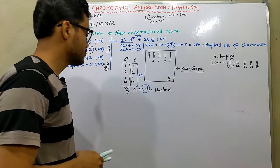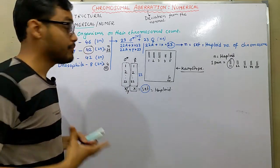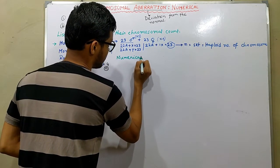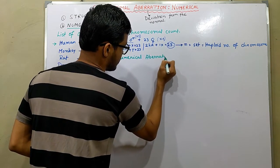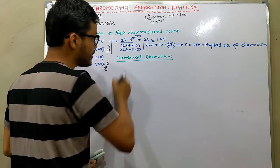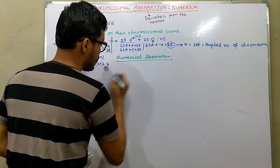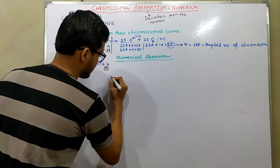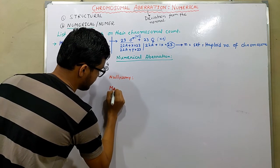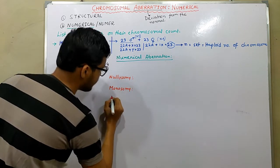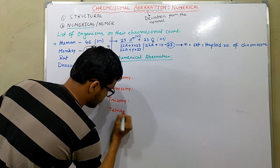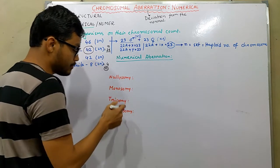In the case of numerical aberrations, where the original number of chromosomes deviates from normal, these aberrations are subdivided into four major categories: nullisomy, monosomy, trisomy, and tetrasomy.